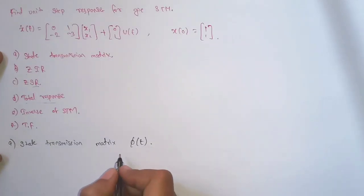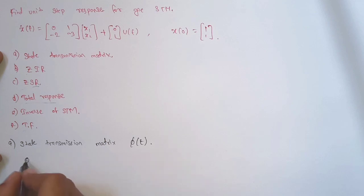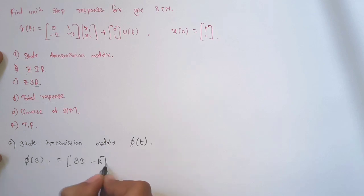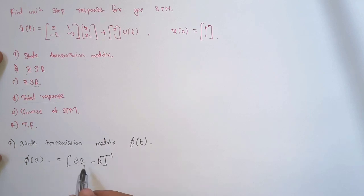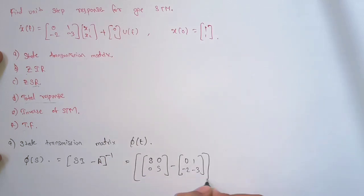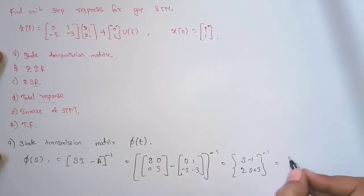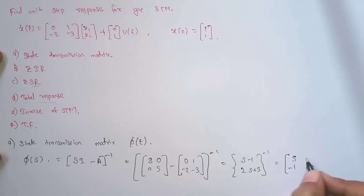To get the state transmission matrix φ(t), the formula requires first calculating φ(s), which equals (sI - A) inverse. Similar to diagonalization where we use (λI - A), here we use (sI - A) and take its inverse. When we compute sI - A and transpose — rows become columns and columns become rows — we get the matrix with elements s minus 1, 2, and s plus 3.